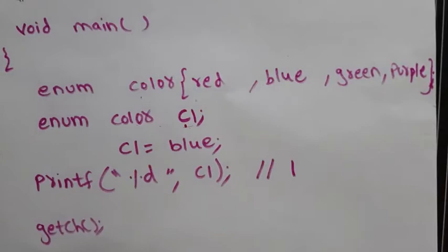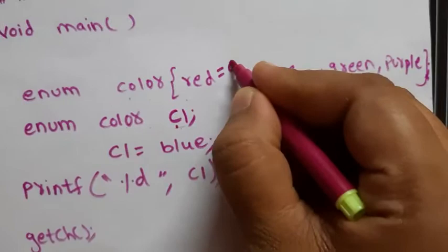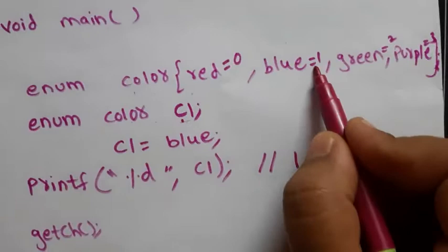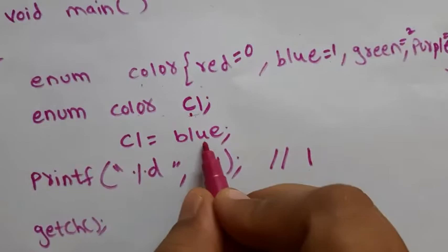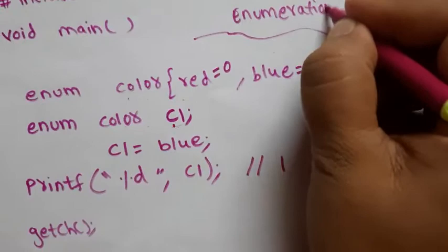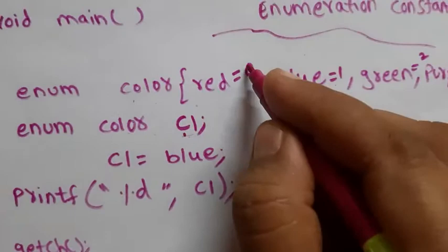The output will be 1. When you write enum with values like red, blue, green, purple, the compiler automatically assigns: red = 0, blue = 1, green = 2, purple = 3. So blue carries value 1, which is why the output is 1. Also, note: you are not supposed to write c1 = 1; you must write c1 = blue. These are called enumeration constants.